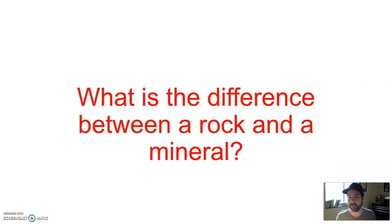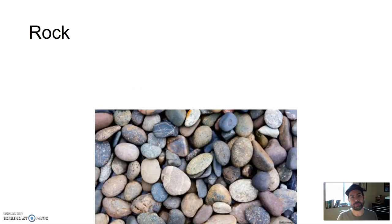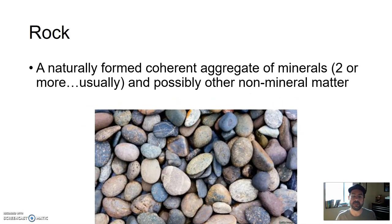What is the difference between a rock and a mineral? If I threw both at you, they'd hurt. They're both stones, but there is a difference. A rock is defined as a naturally formed, coherent aggregate of minerals. Two or more, usually, and possibly other non-mineral matter. So, long story short, rocks are typically two or more minerals mushed together.